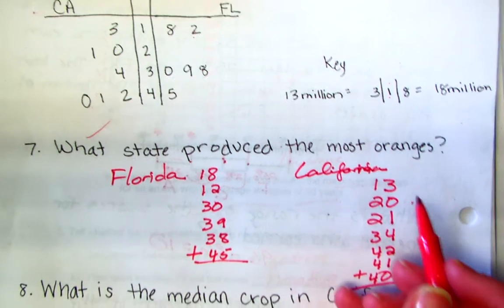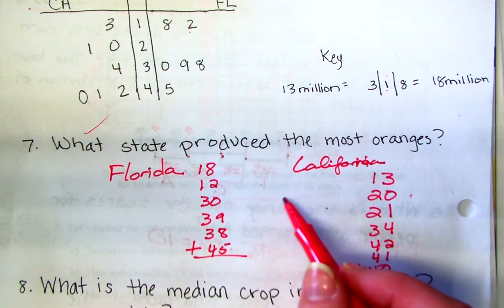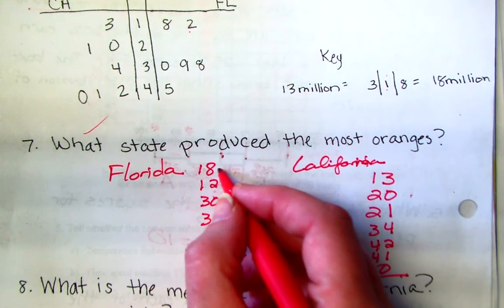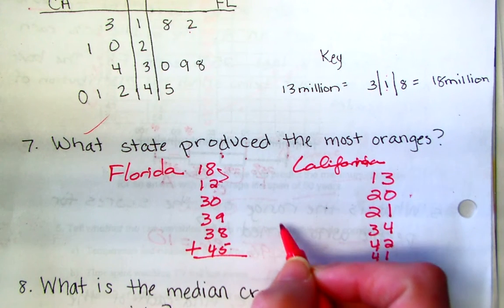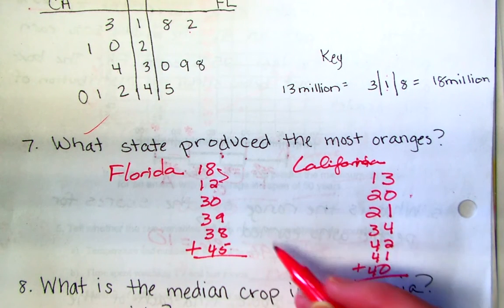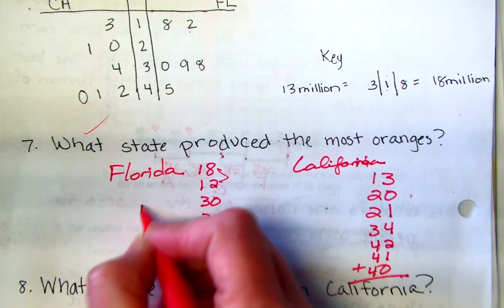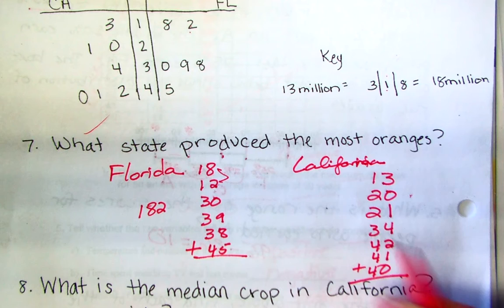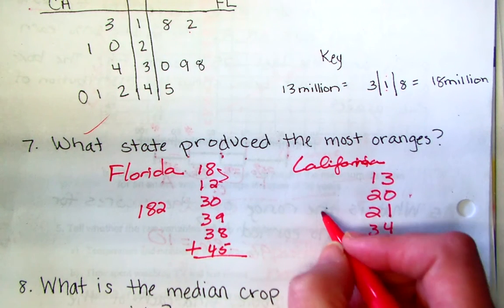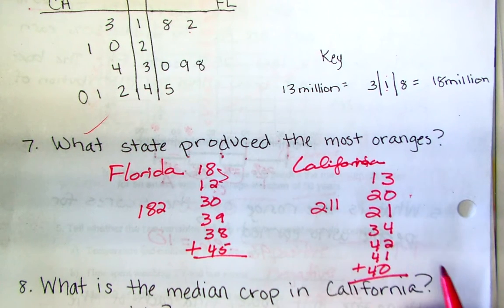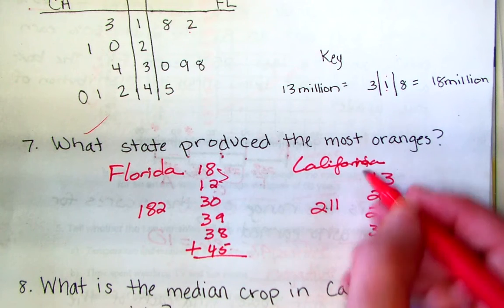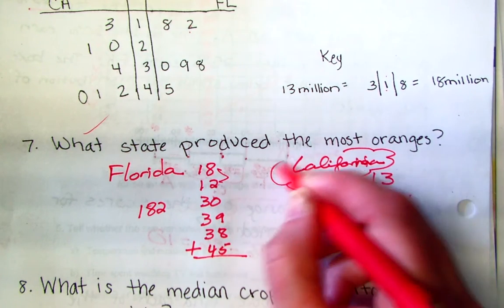If you were to do this on a test I would do two at a time and then rewrite it over here. That way you're probably less likely to make a mistake. The total is 182 for Florida and California is 211. So we can see that California had the most.